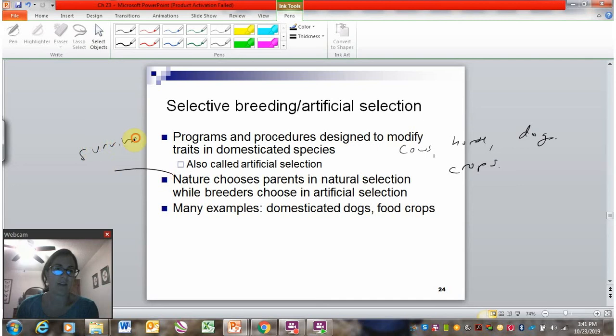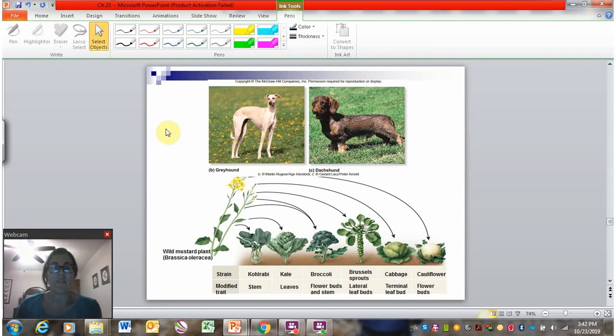But in artificial selection, humans choose who mates. And this is based on whatever trait the human might be looking for. So if it's dogs, it's maybe a smaller dog or a specific color of dog, for example.